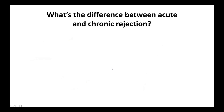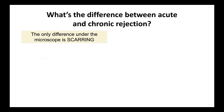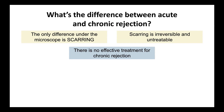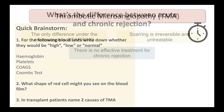The difference between acute and chronic rejection under the microscope is essentially scarring. Everything about cell-mediated or antibody-mediated rejection still applies in chronic rejection, but chronic rejection will also show scarring, which is irreversible and untreatable. There is no effective treatment for chronic rejection — the best we can do is slow it down, unlike acute rejection which we can potentially resolve.